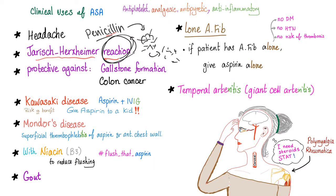Aspirin is protective against gallstone formation — remember the fat, fertile, 40-year-old female mnemonic for gallstone risk factors. Aspirin is also protective against colon cancer. It can be used in lone AFib — meaning the patient has AFib alone with no diabetes, no hypertension, no other thrombosis risk factors — give aspirin alone.